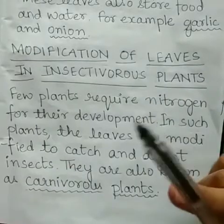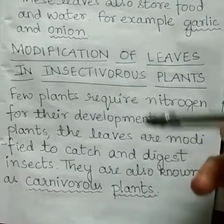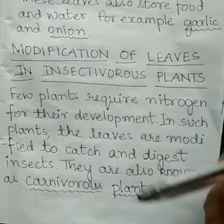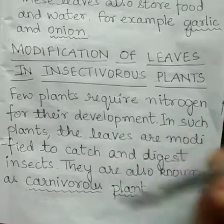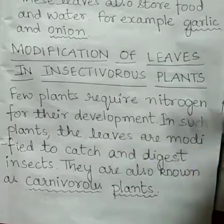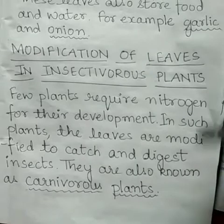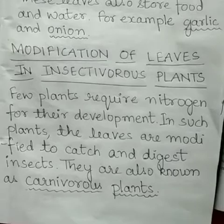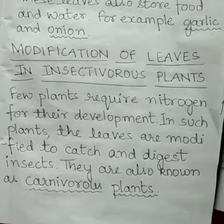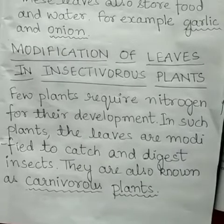Insectivorous plants are carnivorous in nature — just as carnivorous animals eat the flesh of other animals, insectivorous plants feed on insects. They do so because they require nitrogen for their development. They usually occur in damp heaths, bogs, swamps, and muddy or sandy shores where there is abundant water but a lack of nitrogenous compounds in the soil.